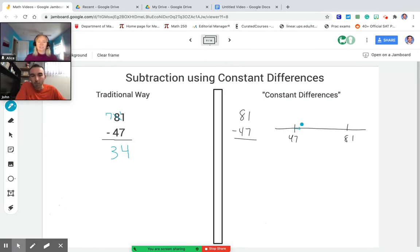So if I just bump this up to 50 that means I'm adding 3. If I do the same thing to 81 that would become 84. So the difference between 50 and 84 is the same as the difference between 47 and 81.